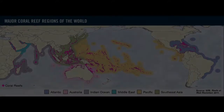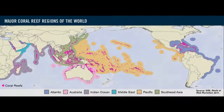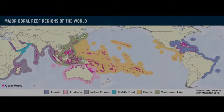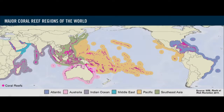Coral reefs are located in tropical oceans near the equator. The largest coral reef is the Great Barrier Reef in Australia. The second largest coral reef is found off the coast of Belize in Central America. Other reefs are in Hawaii, the Red Sea, and other areas in tropical oceans in the tropical zone.